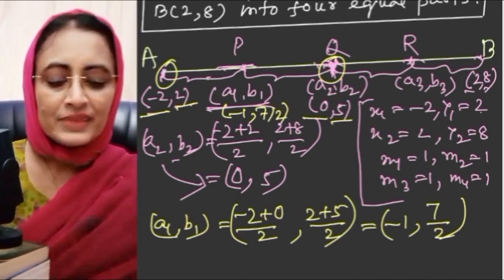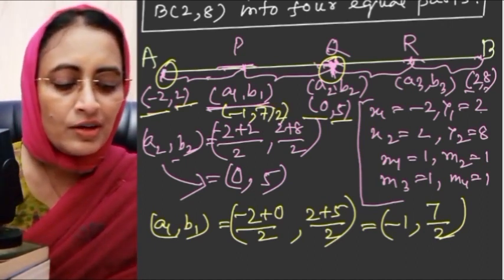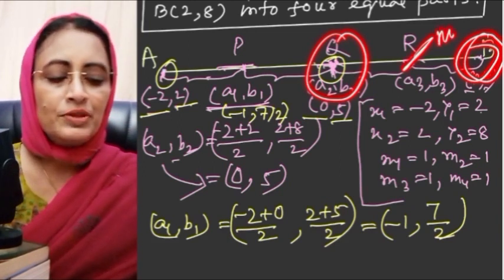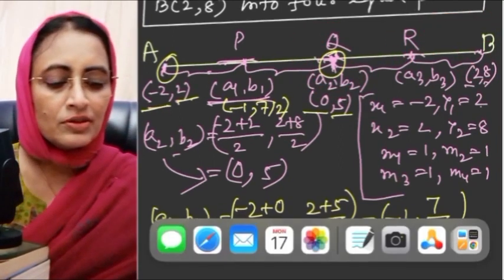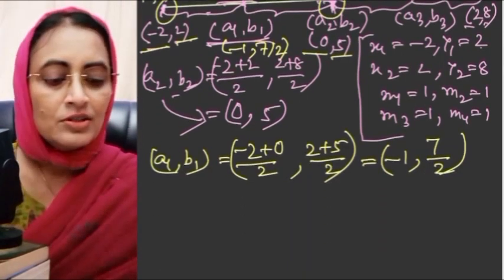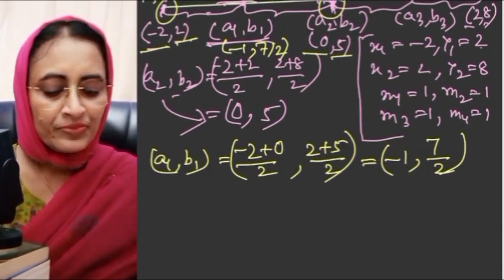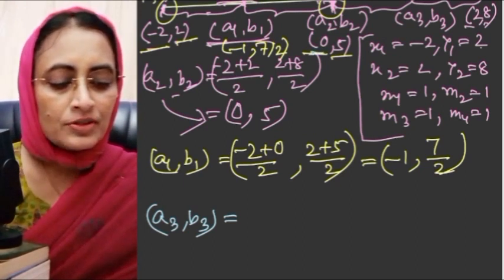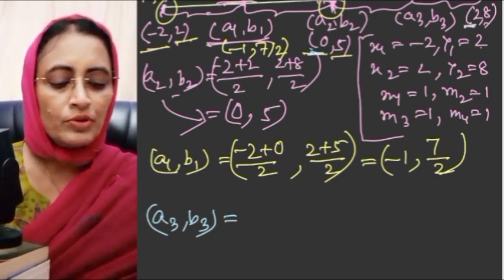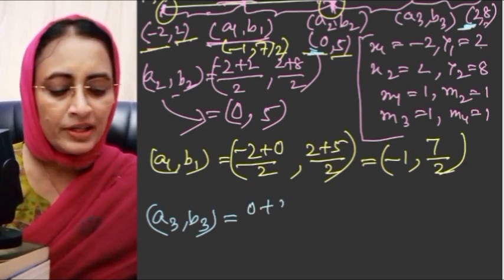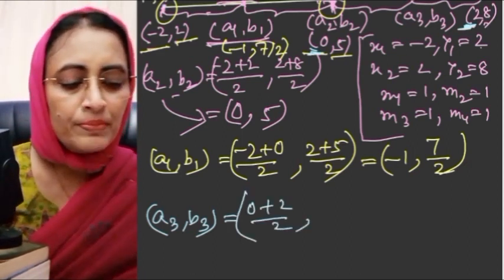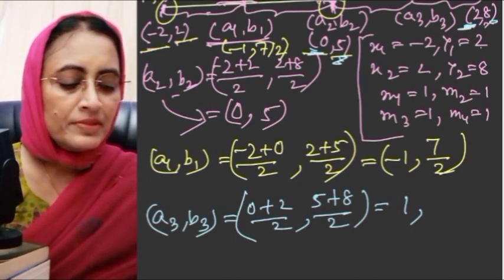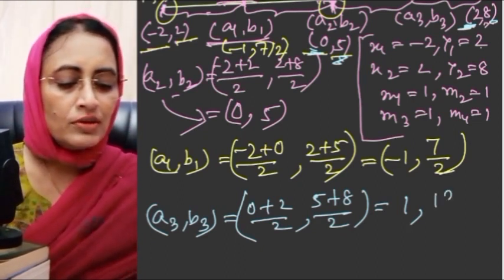So P coordinate is (-1, 7/2). Now R is the midpoint of Q and B. The midpoint formula is easy to use here. So R = ((0 + 2)/2, (5 + 8)/2) = (2/2, 13/2) = (1, 13/2).